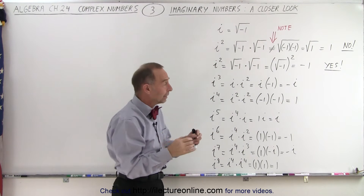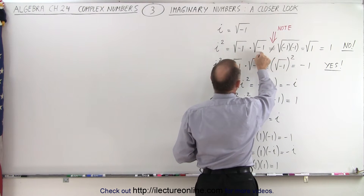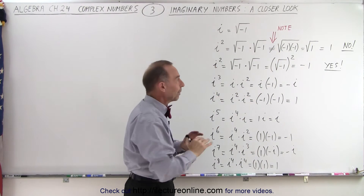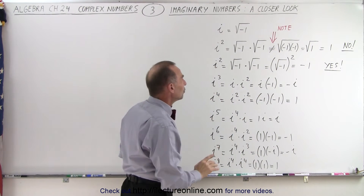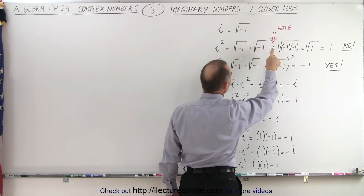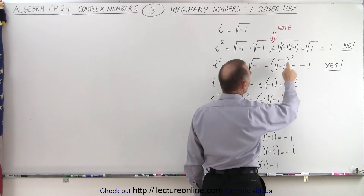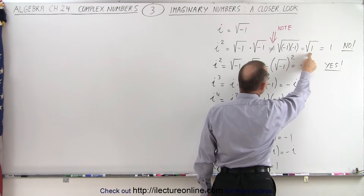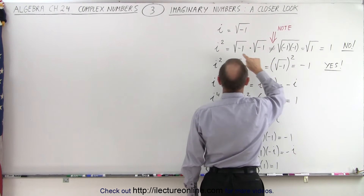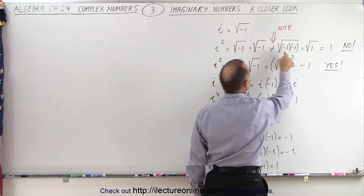We know, by a previous definition, that that would be equal to the square root of the two numbers multiplied together. But in this case, that is not correct — we're not allowed to do that. When we have the square root of negative 1 multiplied by the square root of negative 1, that does not equal the square root of the product, because negative 1 times negative 1 gives you positive 1, and the square root of positive 1 is 1. But that's not the case — i squared is not equal to 1.